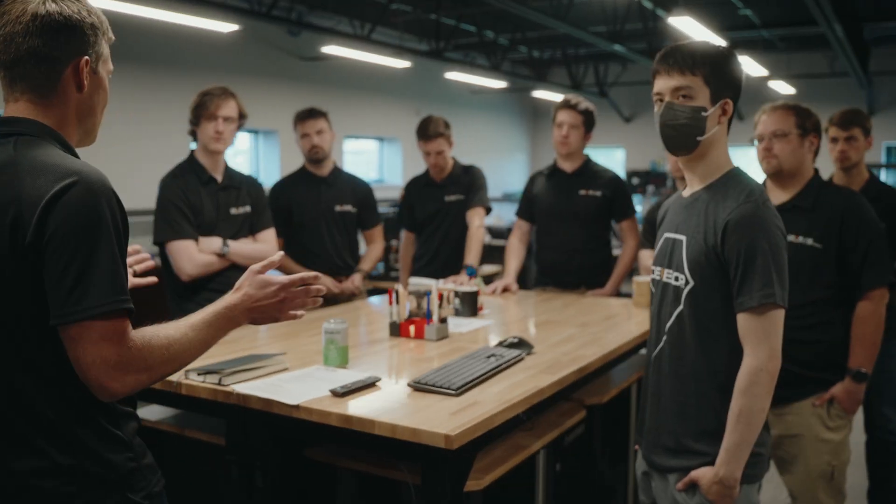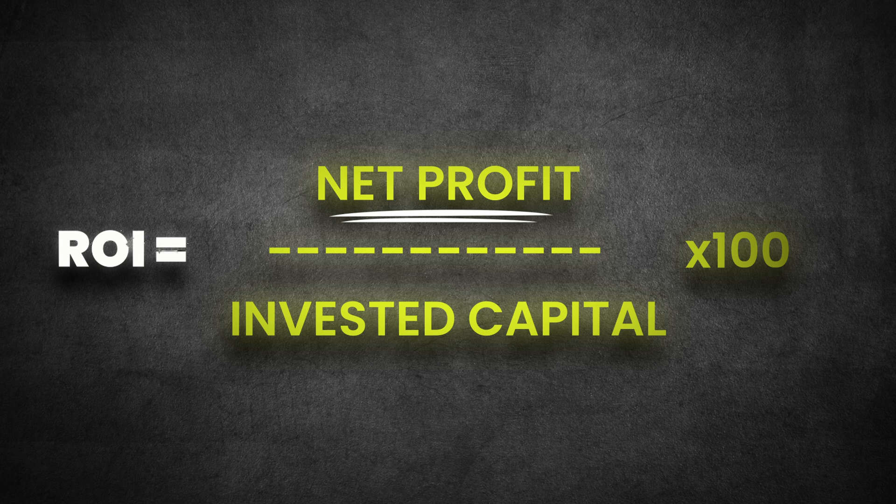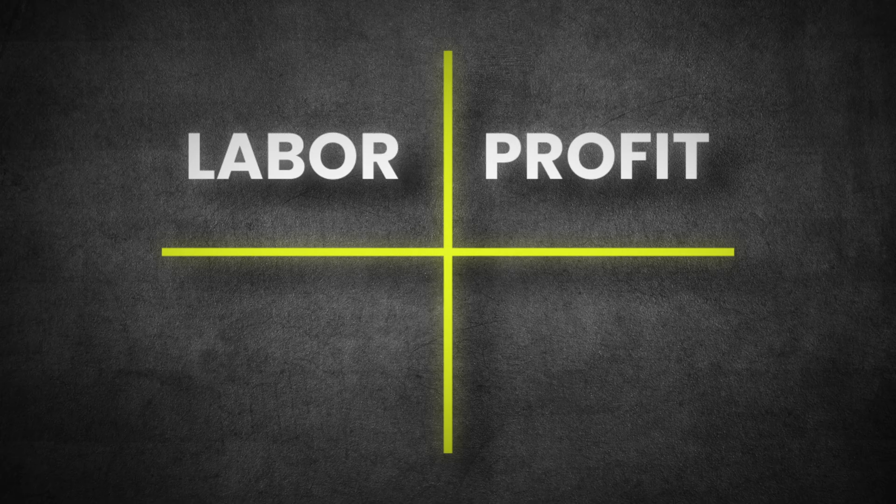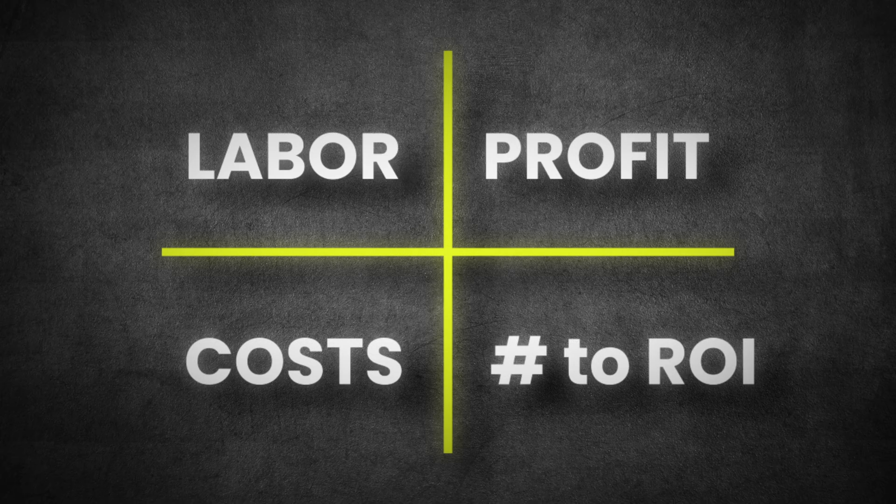When most people talk about return on investment or ROI, they're talking about how long it takes to repay the cost of an investment and graduate to pure profit. Our reverse ROI approach is going to show you how to calculate current state and future growth needs simultaneously by measuring current labor and increased cash flow against your target years to ROI to determine a realistic automation budget.